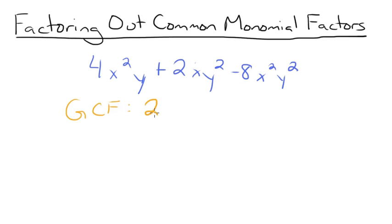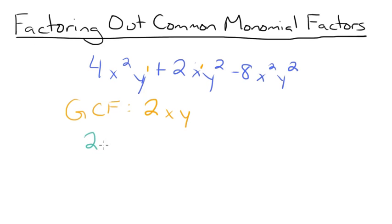We'll have 2 multiplied by the GCF of x squared, x, and x squared, which is x — that's the x term with the lowest exponent. Remember, if there's no exponent written, it's assumed to be 1. The GCF of y, y squared, and y squared is y, again with the assumed exponent of 1. So the GCF of these three terms is 2xy. We set up our parentheses: 2xy times whatever our trinomial is going to be inside.